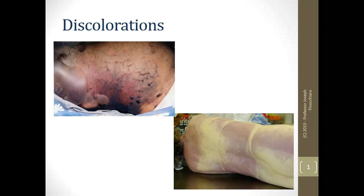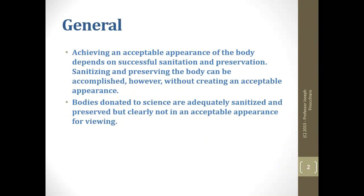I'm going to talk about discolorations. This is one of the largest chapters in the book, so I'm going to nutshell things as we go through. This is an important chapter for you to read in its entirety and make lots of notes. Generally when we do embalming, two of our major goals are to preserve the body and sanitize it. A third objective is to restore to an acceptable appearance.